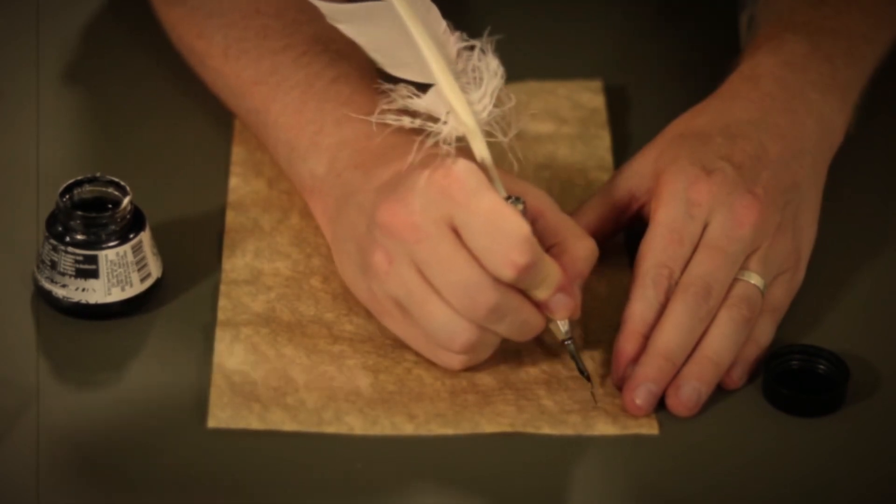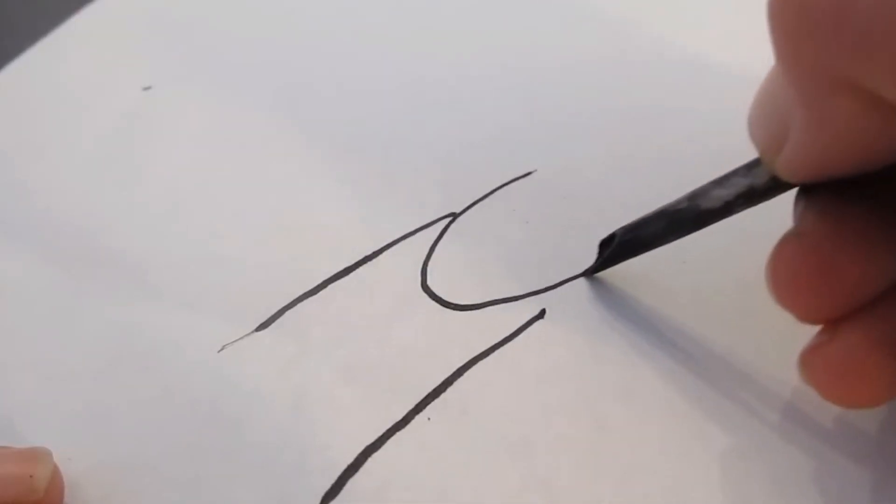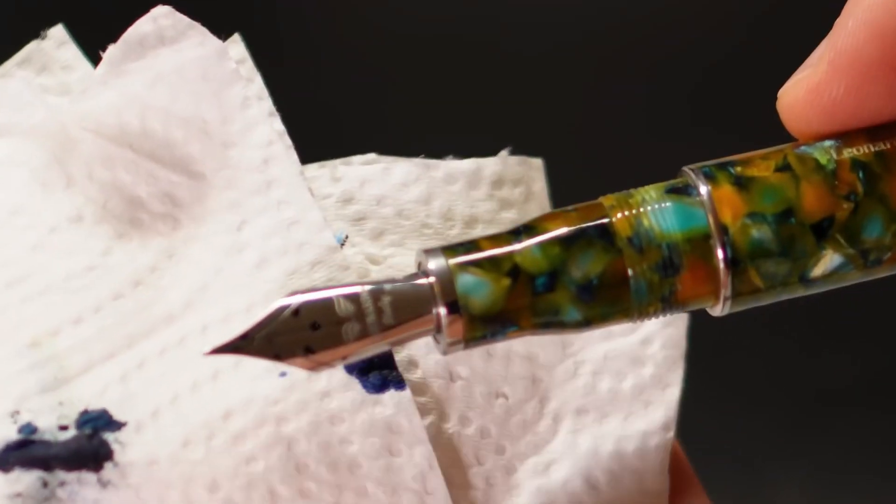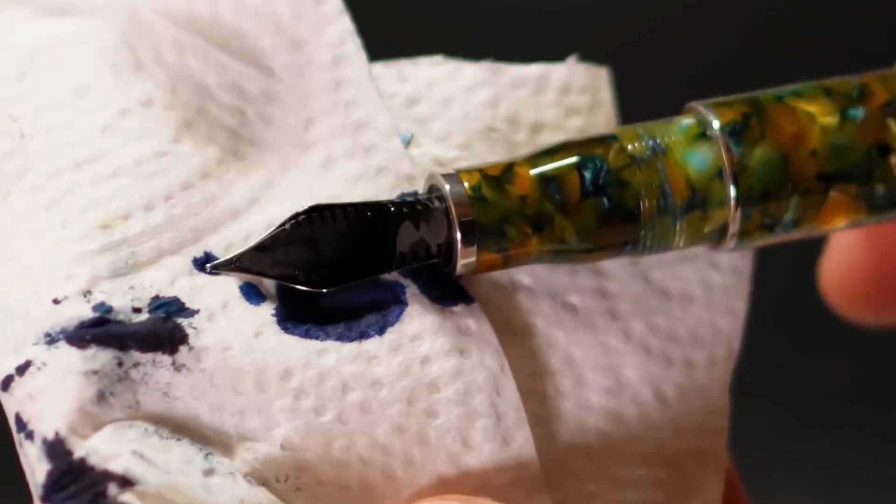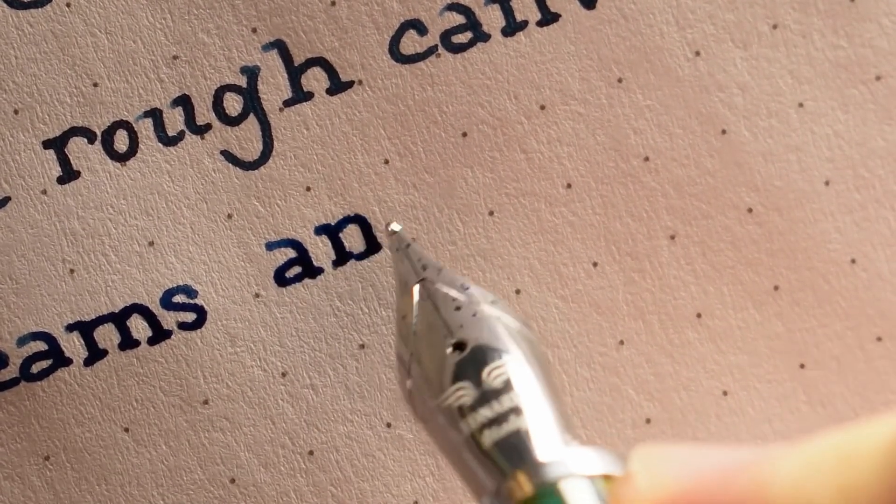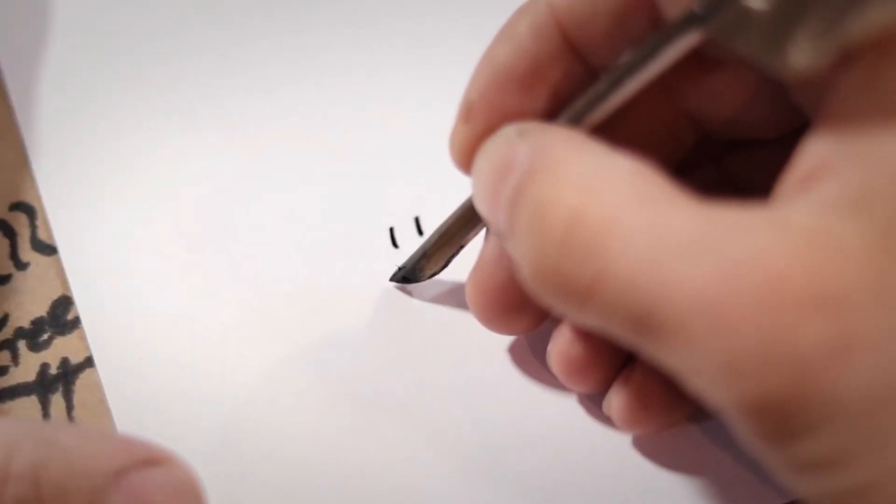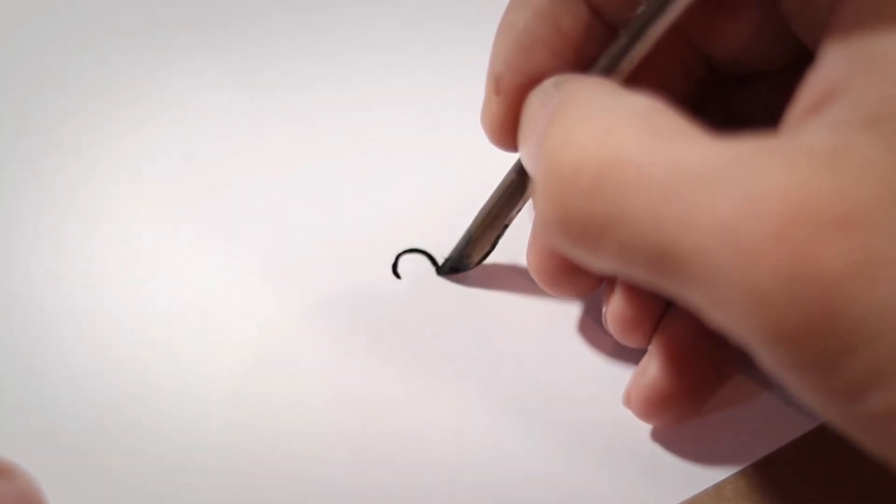Then something really cool happened in the year 953 A.D. in Egypt. A king wanted a pen that wouldn't make a mess. He didn't want ink on his royal clothes. So, a clever inventor made a special pen that had a little tank inside to hold the ink. This was the first fountain pen, and it was so good at not spilling that the king was super happy.